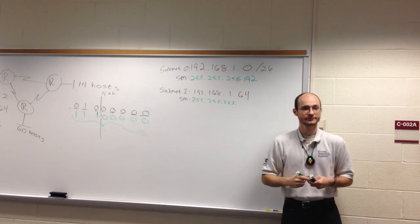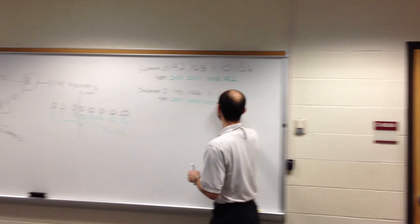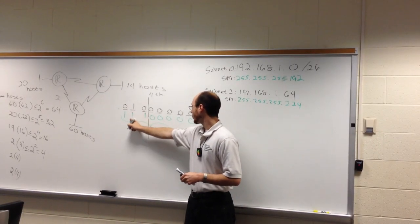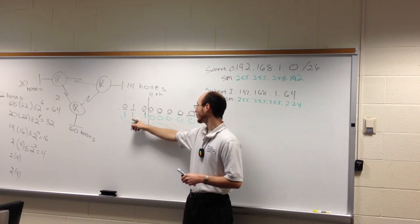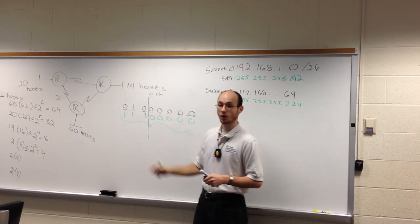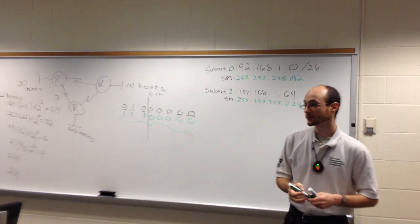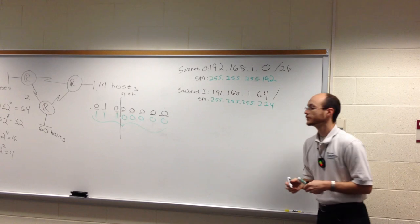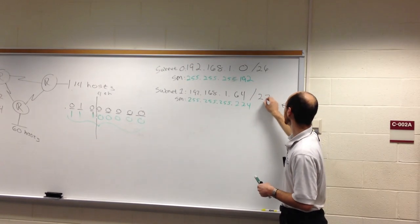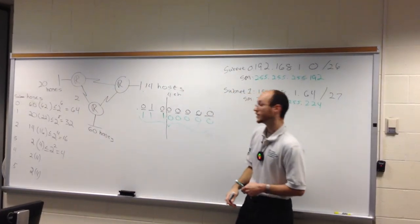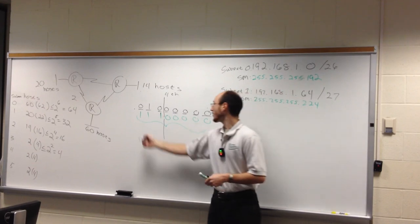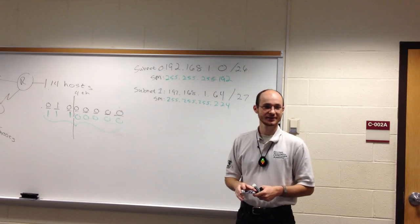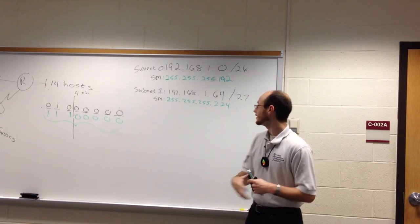The prefix /27 comes from 24 ones in the first through third octets plus three additional ones in the fourth octet. For subnet two, I ask the same question: the broadcast for subnet one is 64 + 32 = 96, so the broadcast address is 95. The network address for subnet two is 96 — 192.168.1.96.